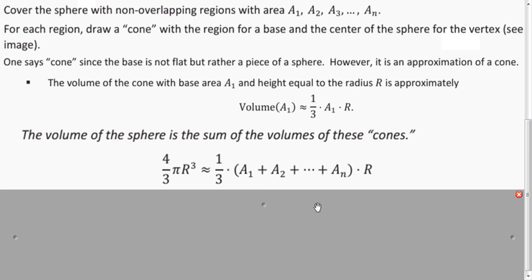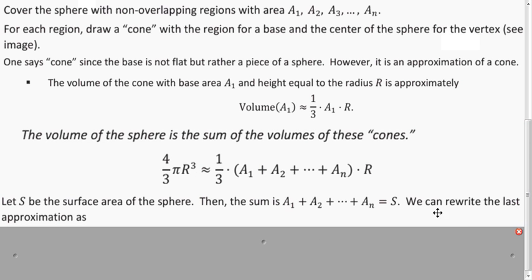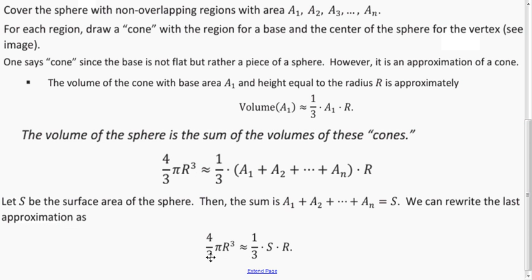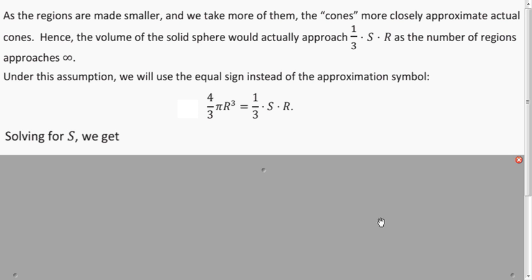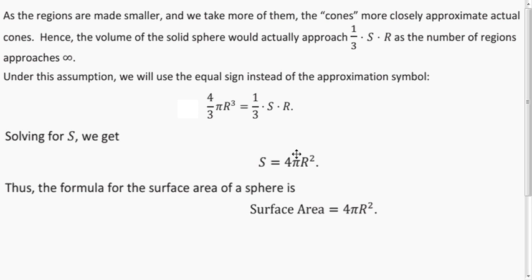The volume of the sphere is what we get when we add up all those cones together, which equals one-third times the sum of all those areas times r — factoring out the one-third and r. If we let S equal the sum of all these areas, that's the surface area of the sphere. We use an approximation sign because we're approximating with cones, not truly flat cones. But as the number of regions approaches infinity, they become equal, and we can solve for S and get 4πr² as the surface area of a sphere.